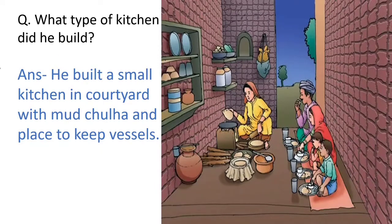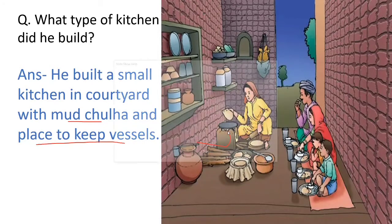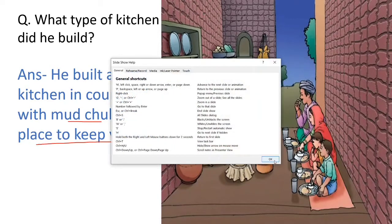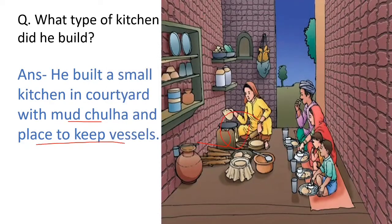What type of kitchen did he build? Before the marriage of Chetan Das, he built a kitchen in the courtyard and a toilet in the backyard. He built a small kitchen in the courtyard with a mud chula and places to keep vessels — these are the shelves where they kept the vessels and utensils.